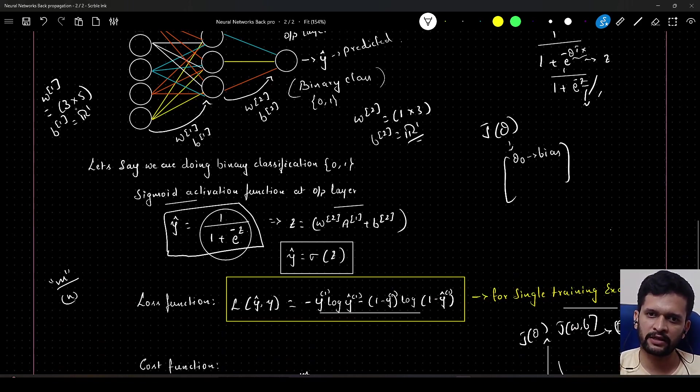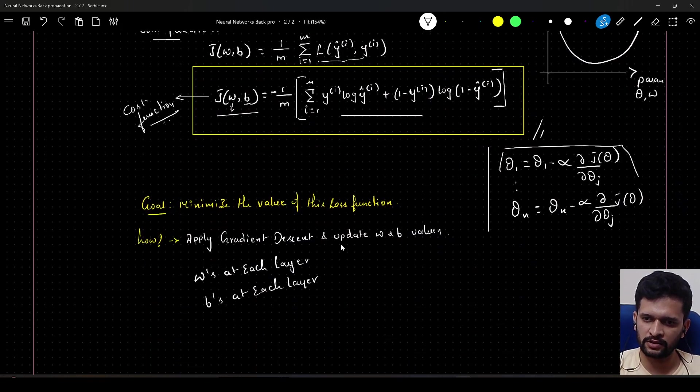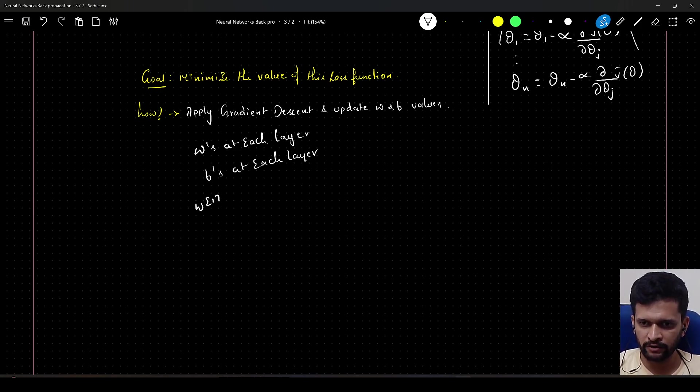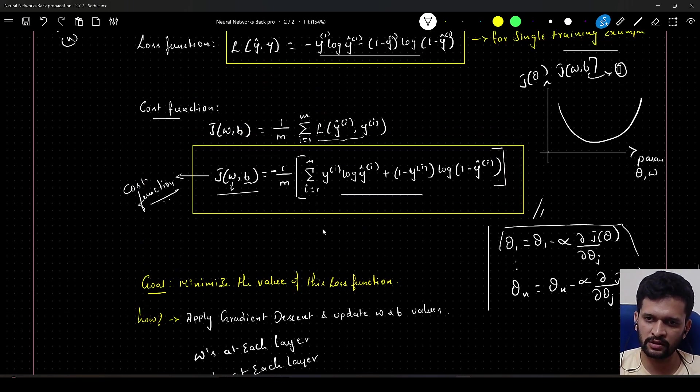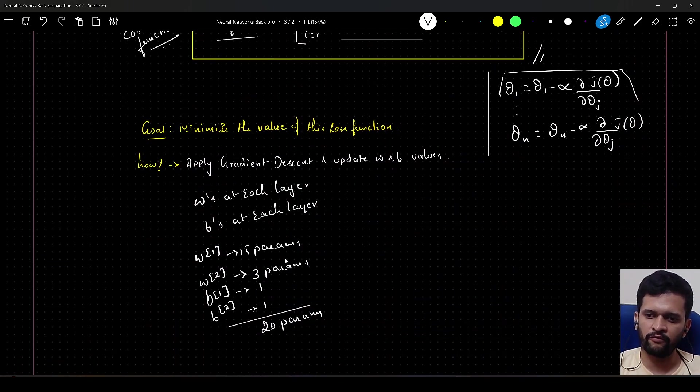Weight w of 1 is a matrix of shape 3 cross 5, so it will be having 15 parameters. Weight of 2 will be having 3 parameters. And we have 2 biases. In the end, we will learn total: weight 1 is having 15 weights, weight 2 will have 3 parameters to learn, and we have bias associated with layer 1 and bias associated with layer 2, this is 1 and this is 1. So total 15 plus 3, 18 plus 2, 20 params we have to learn in case of this neural network architecture.